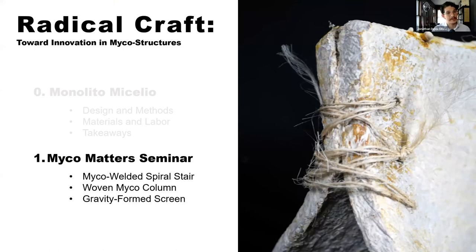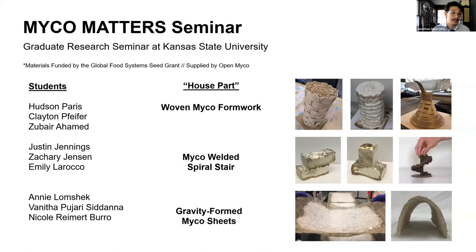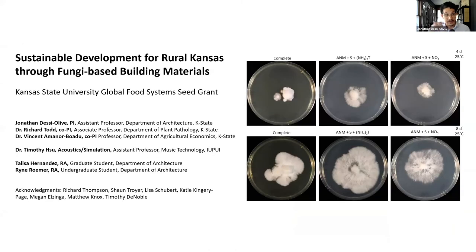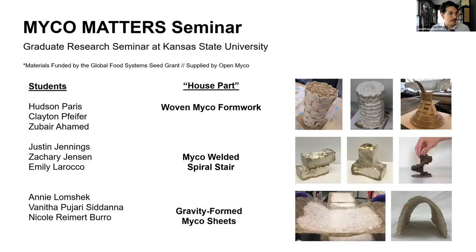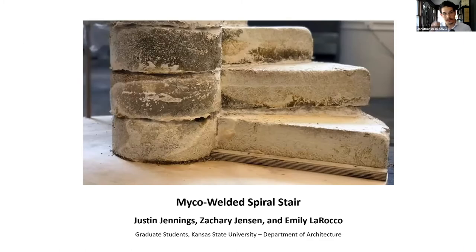A lot was learned in that project. I want to take you through work done in a seminar this last spring at Kansas State University, where we essentially took the larger questions from that pavilion and put them into students' hands to experiment. This work is funded by a grant looking at the larger issues of mycomaterials in the development of rural economies in Kansas, with collaborators in agricultural economics, plant pathology, and fungal genetics. Three projects: a welded stair, a woven column, and a gravity-formed screen.